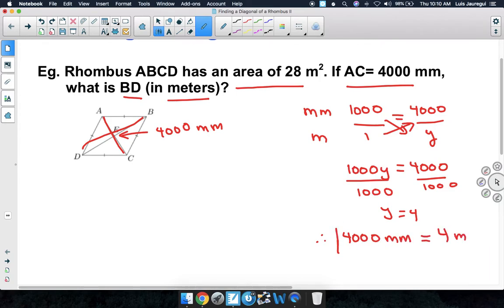Okay, so now we have everything in meters, so we can actually use our area formula for the rhombus. We can say area is equal to 1 half times diagonal 1 times diagonal 2. Since we already know that the area is 28 square meters, we're going to replace the A with the 28 square meters.